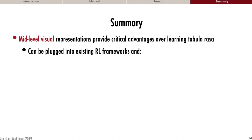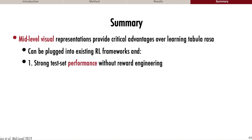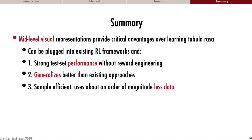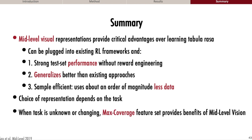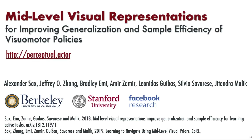In summary, we showed that agents using mid-level visual representations can gain critical advantages over learning tabula rasa. The policies can be trained using existing RL frameworks and exhibit strong test performance without reward engineering. They generalize better than existing approaches and can train in a sample-efficient manner using an order of magnitude less data. However, the choice of representation depends on the task, and when the task is unknown or changing, a set of features — the max coverage feature set — could provide more general perception. All this and more is on our website, perceptual.actor.